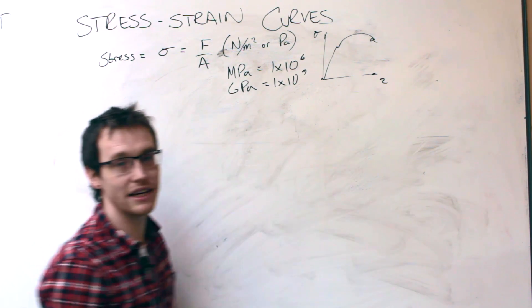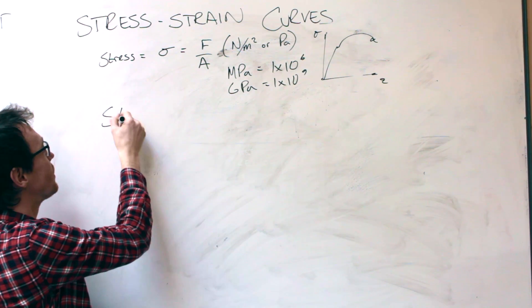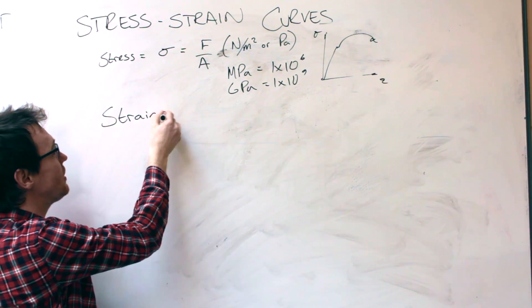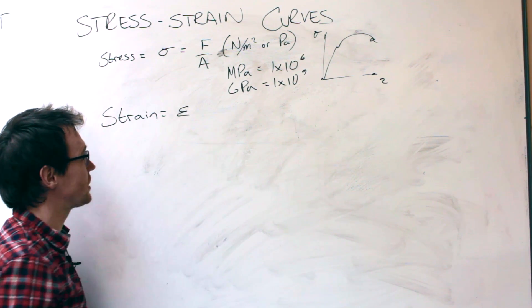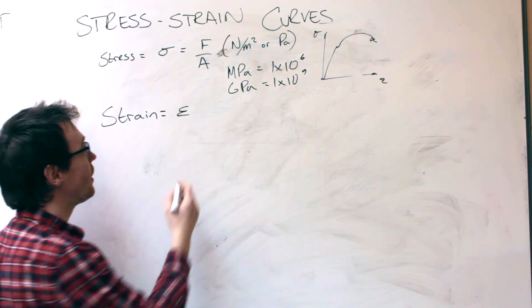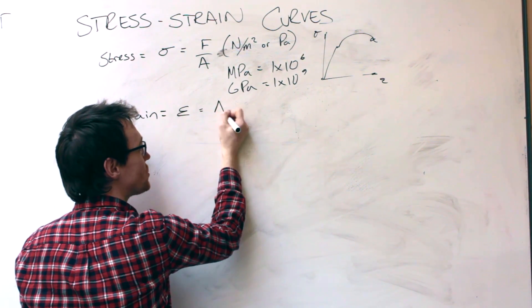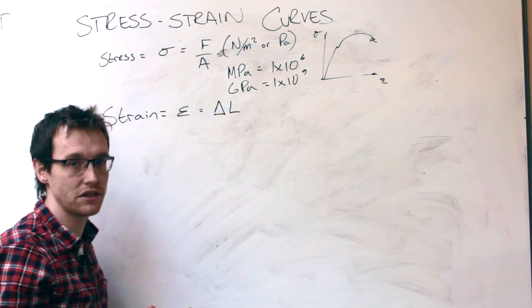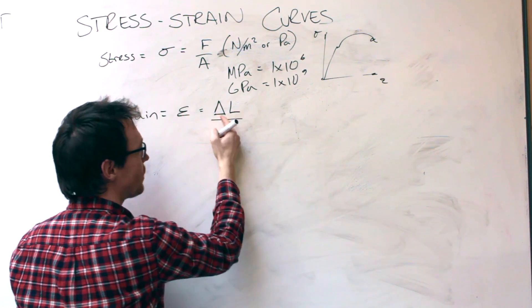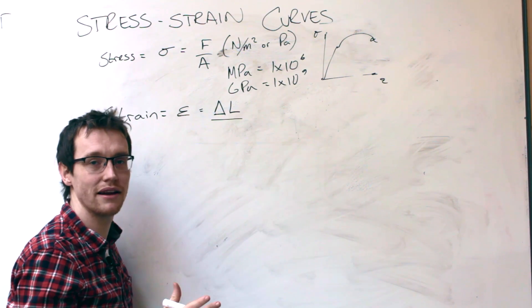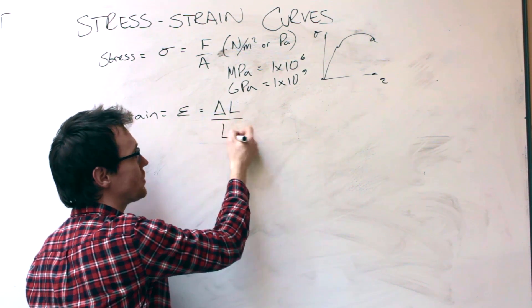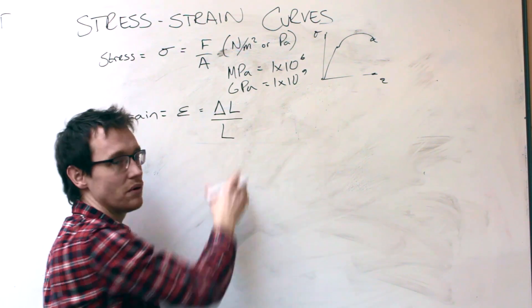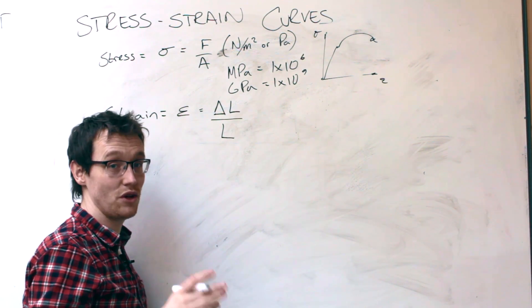Next factor that we need to think about is strain. Strain given by the Greek letter epsilon, which is sort of like a back to front 3. That is given by the change in length, delta L. Whenever you see a delta symbol 9 times out of 10, it will mean change in. Change in length over the original length.